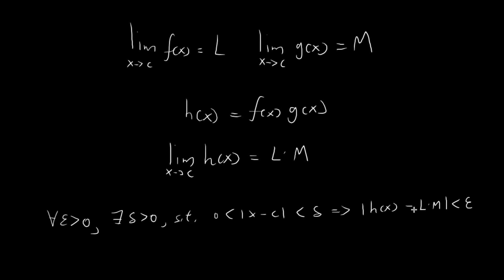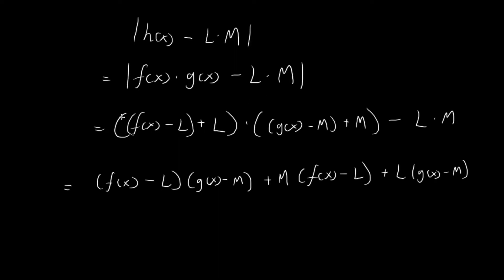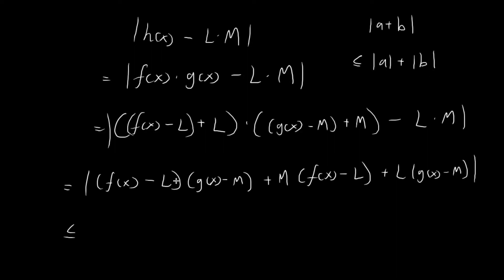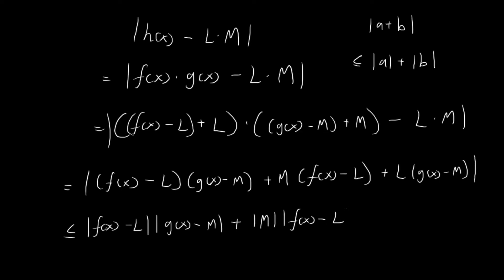There is an absolute value sign around the full expression. Invoking the triangle inequality — which states |a + b| ≤ |a| + |b| — and applying it twice for three terms, we get: |h(x) - LM| ≤ |f(x) - L|·|g(x) - M| + |M|·|f(x) - L| + |L|·|g(x) - M|.